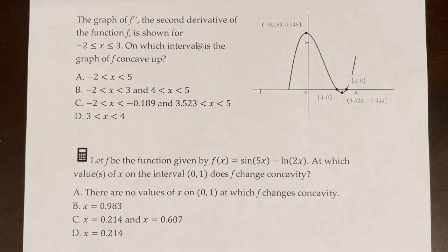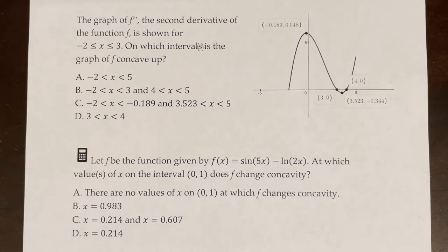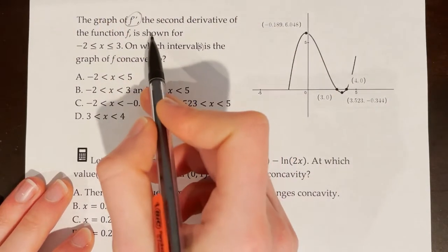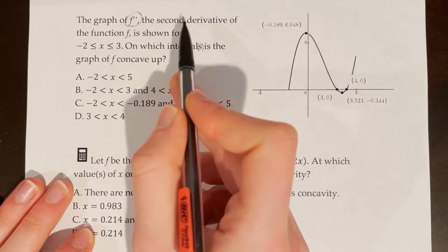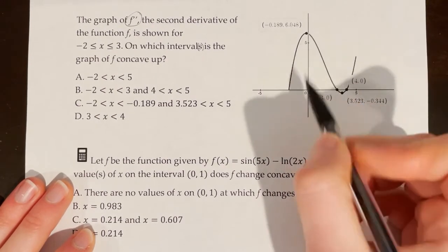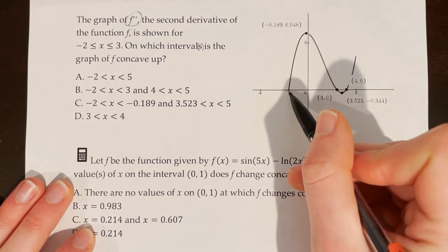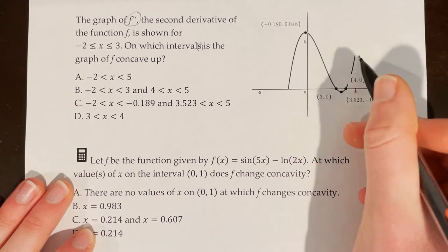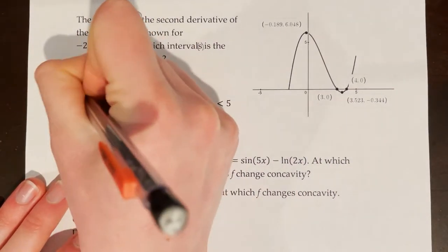The graph of f double prime, the second derivative of f, is shown for the closed interval from negative two to three. On which interval or intervals is the graph of f concave up? Since we're looking at the graph of the second derivative, f is concave up when f'' is greater than zero, or positive. f'' is greater than zero on the intervals from negative two to three and four to five, so the correct answer is B.